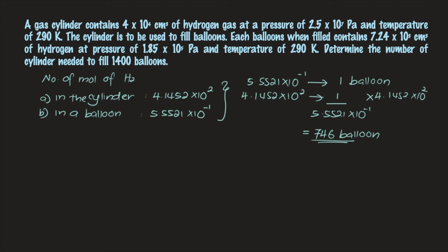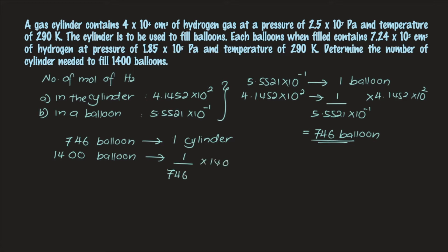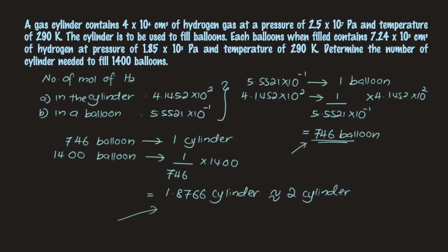We know that 746 balloons can be filled using just one cylinder. But you are asked to calculate for 1,400 balloons. Therefore, 1 divided by 746 times 1,400 gives 1.8766 cylinders. Since one cylinder is not enough (it can only fill 746 balloons) and you don't need 3, this rounds up to 2 cylinders as the final answer for question 1.